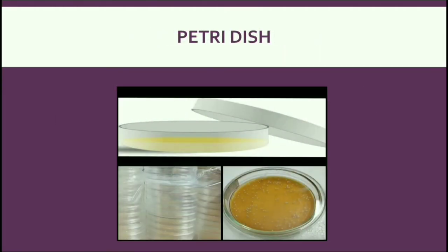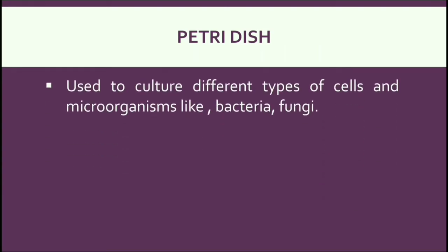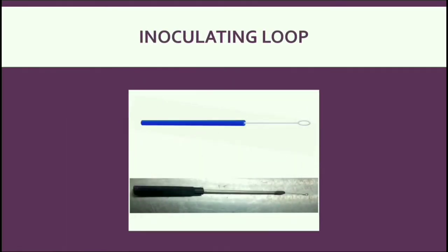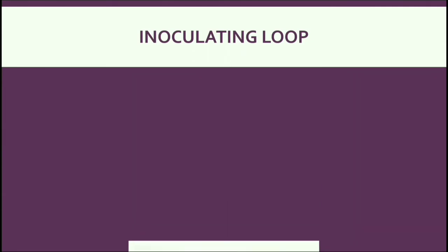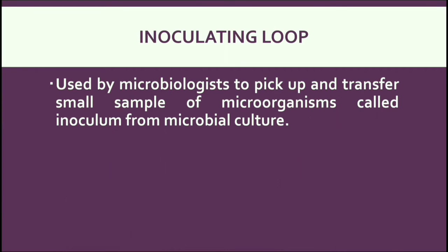Petri dish or Petri plate. It's a transparent-lidded dish used to culture different types of cells and microorganisms like bacteria and fungi. Next, Inoculating Loop. It's a simple tool used by microbiologists to pick up and transfer small samples of microorganisms, called inoculum, from a microbial culture.